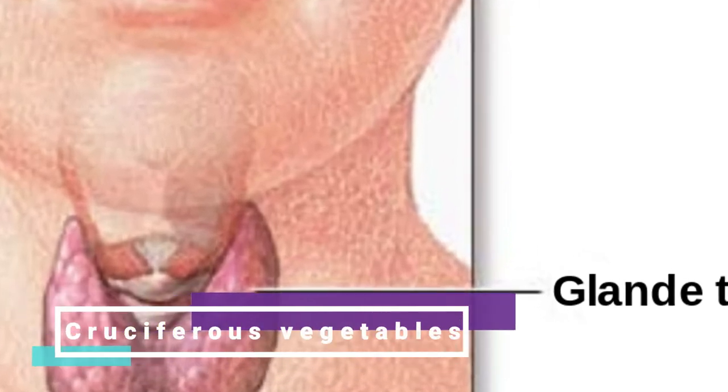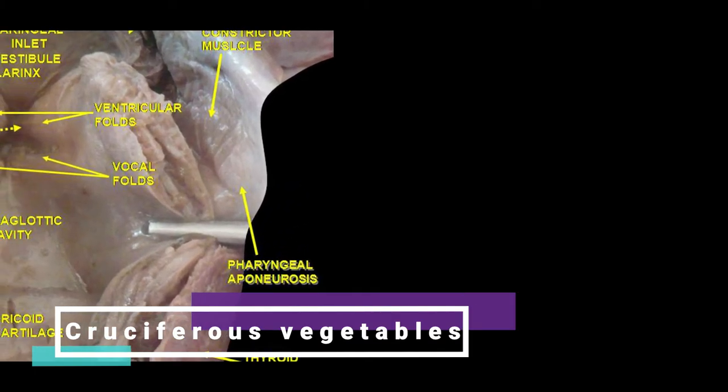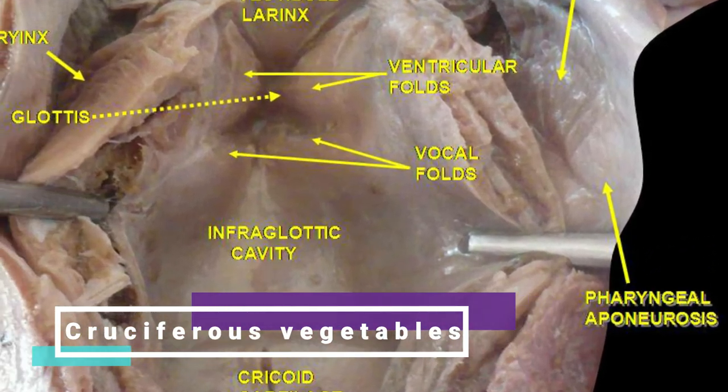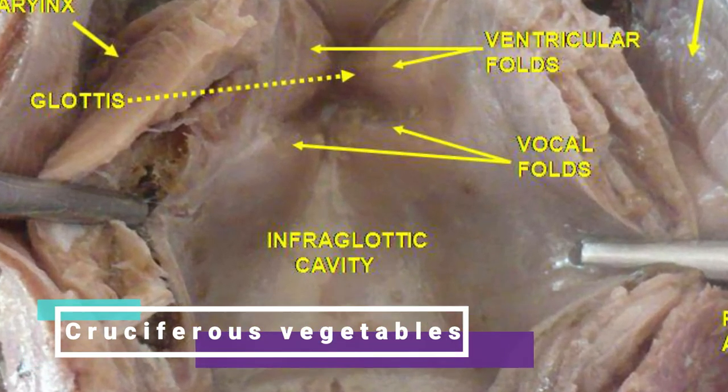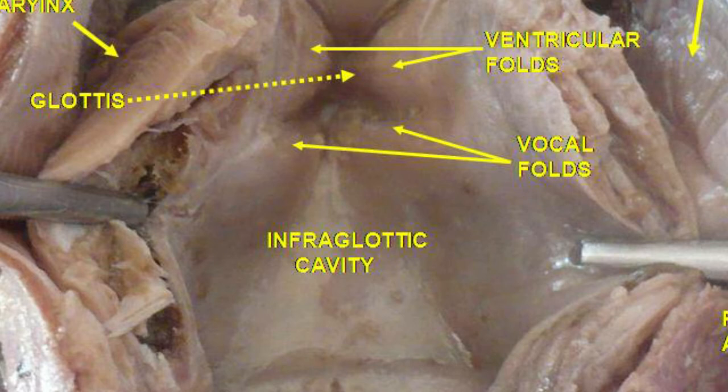Cruciferous vegetables. Cruciferous vegetables and other types may stop your thyroid from using iodine properly. They may be beneficial for hyperthyroidism: bamboo shoots, bok choy, broccoli, Brussels sprouts, cassava, cauliflower, collard greens, kale, mustard, and rutabaga.